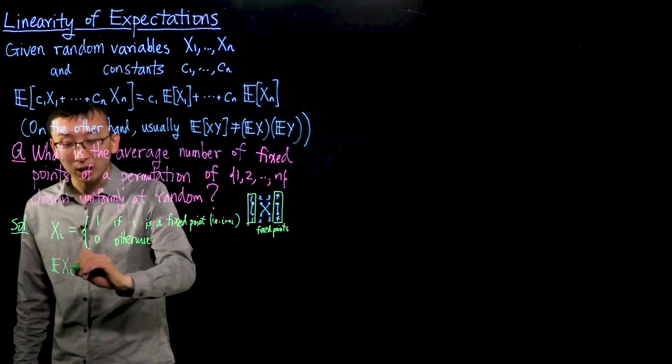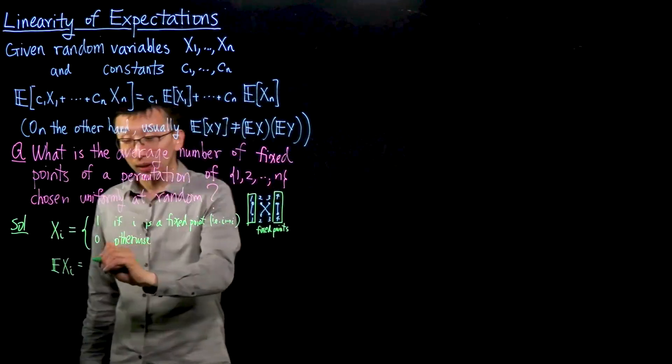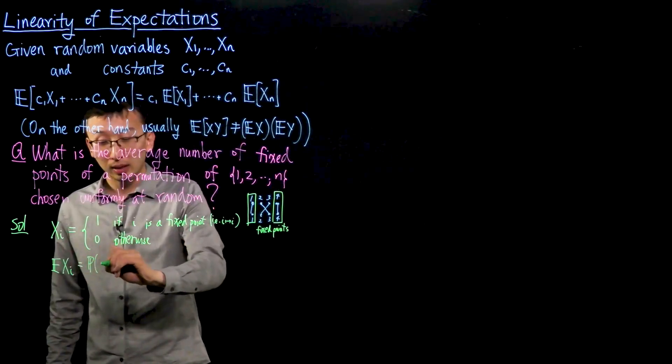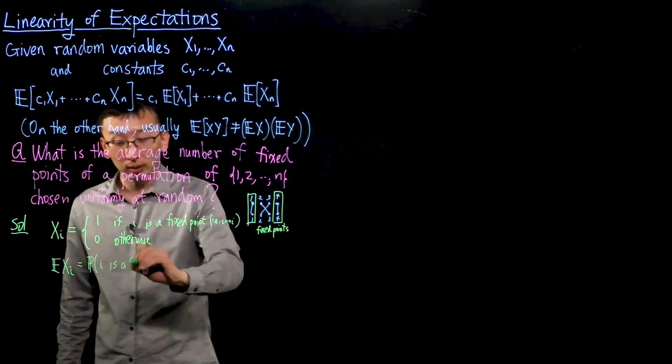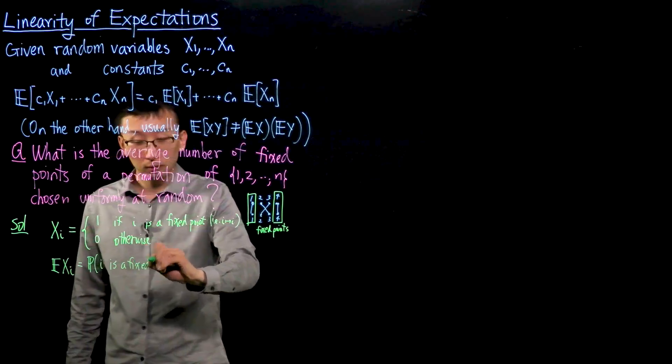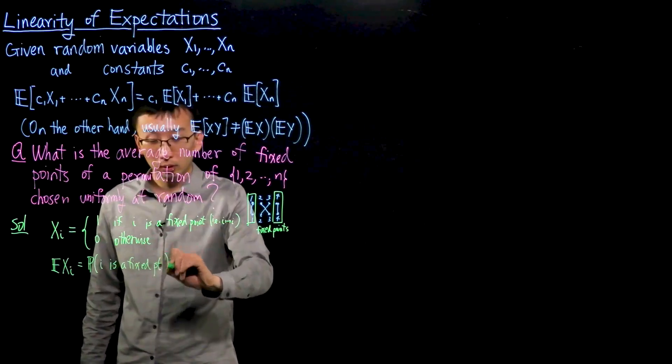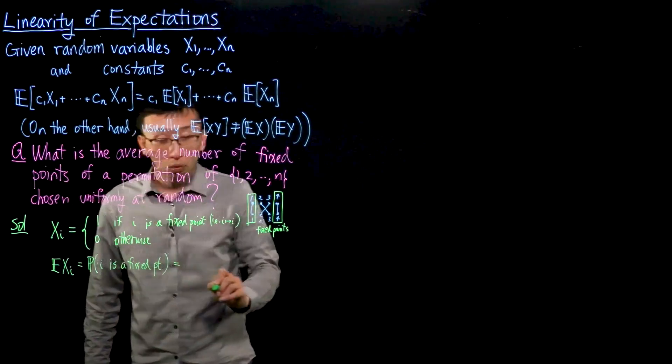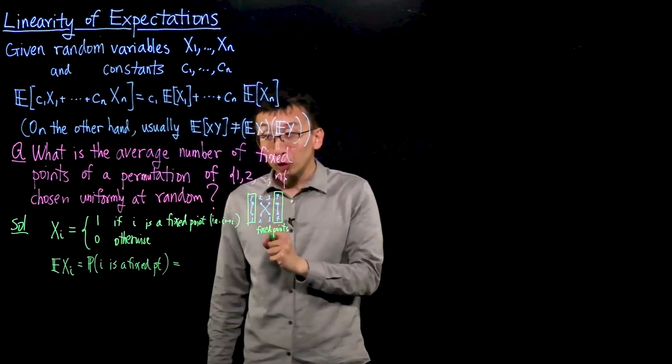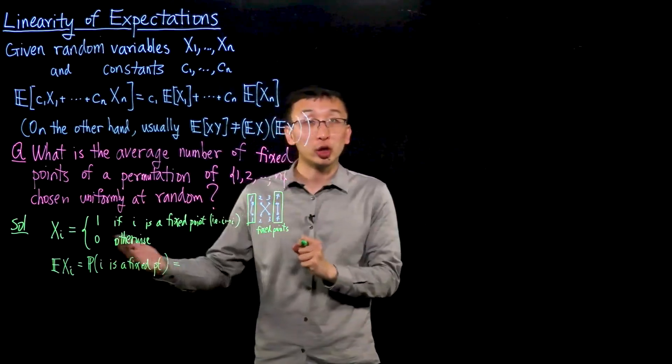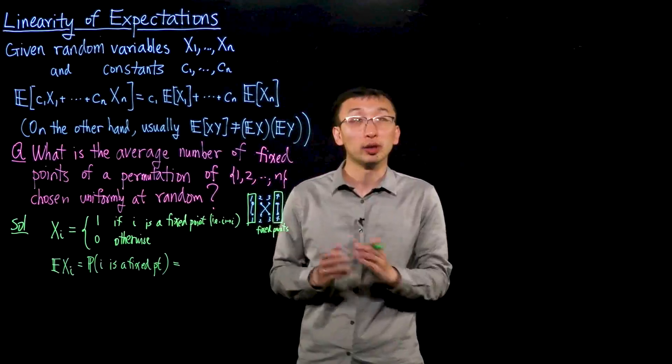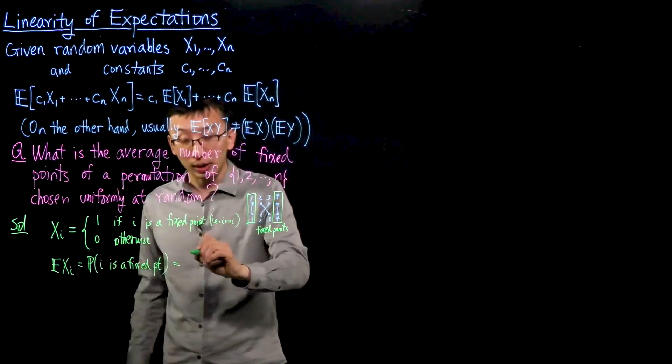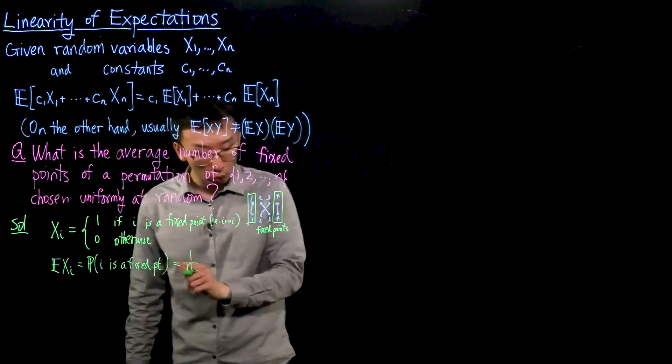What's the expectation of xi? Well, this is the probability that i is a fixed point. This being a uniform permutation chosen uniformly at random, i is sent to each of the elements 1 through n with equal probabilities. So in particular, it is sent back to itself with probability 1 over n.